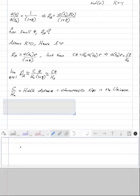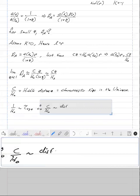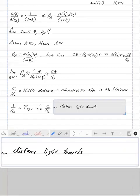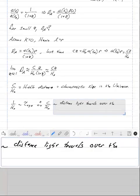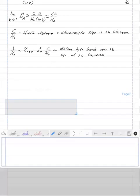So once again, one over H naught is roughly the age of the universe. And so therefore, C times one over H naught is roughly equal to distance light travels over the age of the universe. So that's a characteristic size of the universe.